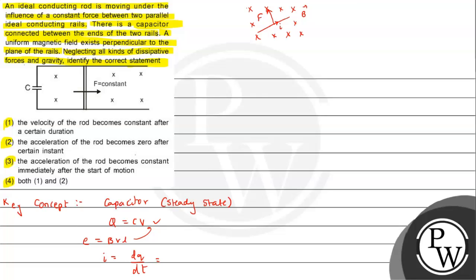Also we need to understand during motional EMF, when we have derived this expression BVL, the free electrons will experience a force in the downward direction. Positive charge will accumulate at the top and negative charge will accumulate at the bottom. Due to that, a potential difference is created and due to which a current will be flowing in the capacitor.